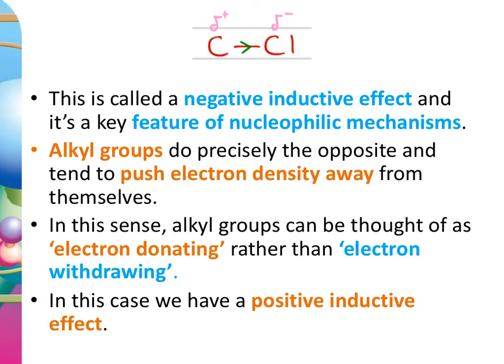If instead of a halogen we have an alkyl group bonded to our carbon, alkyl groups push electron density rather than withdrawing it. So you can think of alkyl groups as electron-donating, whereas a halogen bonded to a carbon is electron-withdrawing. When alkyl groups are bonded to a carbon, this is now a positive inductive effect.